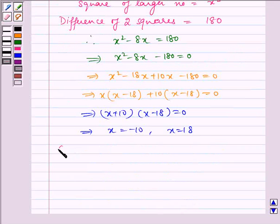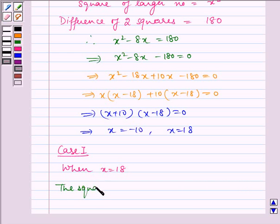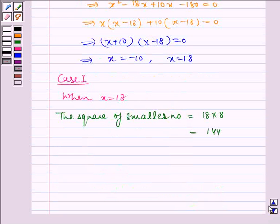Now case 1. When x is equal to 18, the square of smaller number is equal to 18 into 8 which is equal to 144. Therefore, smaller number is equal to plus minus 12.